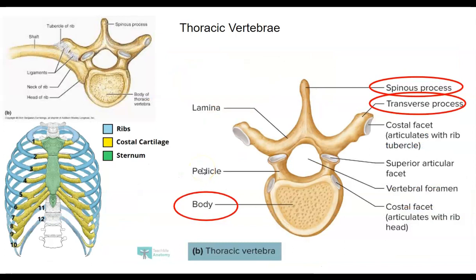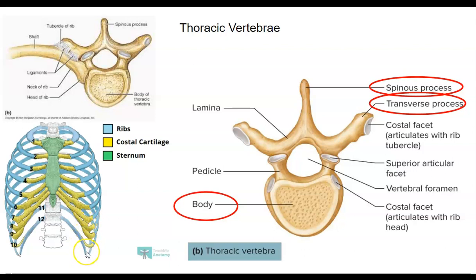Let's look at some thoracic vertebrae. I want you to be able to spot the body of the vertebra, the spinous process, and the transverse process. Remember, the thoracic vertebrae are the ones that articulate with ribs — there are 12 thoracic vertebrae and 12 pairs of ribs. Seven pairs articulate directly with the sternum — those are called true ribs. Three pairs articulate indirectly — those are called false ribs. And two ribs at the bottom don't connect to the sternum at all — those are called floating ribs.